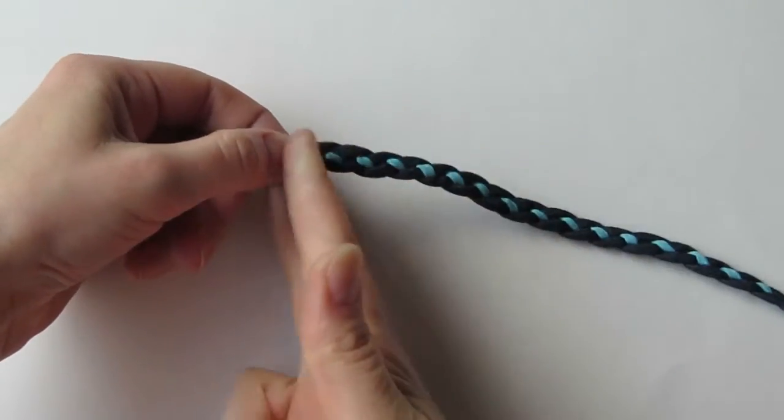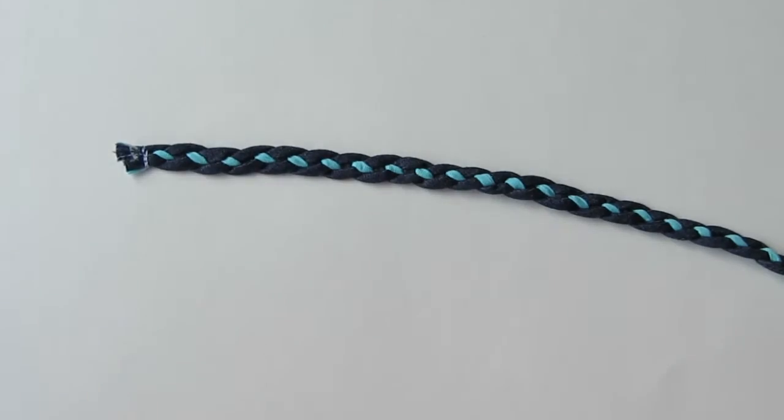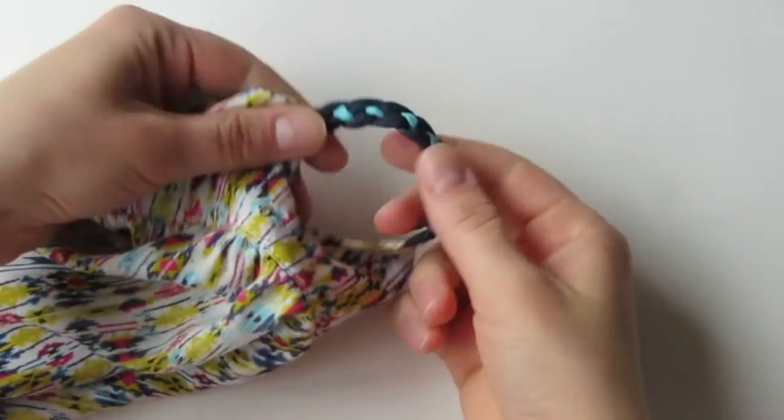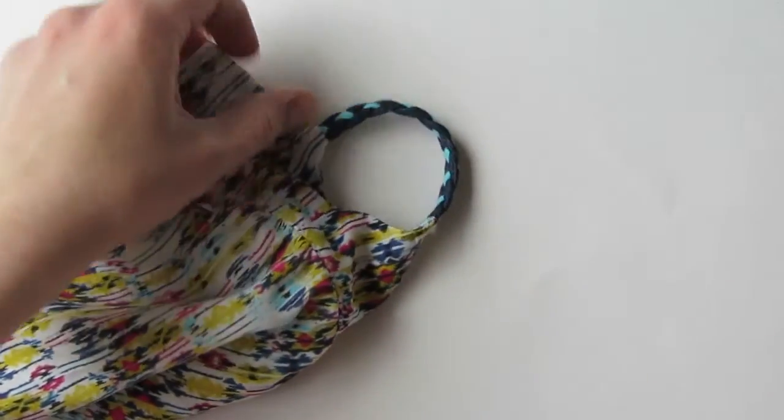As a quick reminder, don't forget to sew across the braid on both sides before you cut it. This will keep it from unraveling and make your life a lot simpler. Once you have your straps cut, go ahead and finish putting the dress together following the instructions in the pattern guidebook.